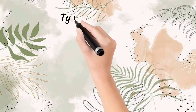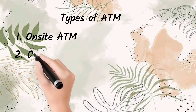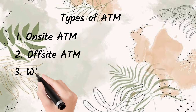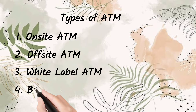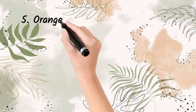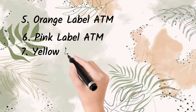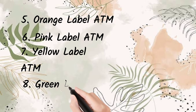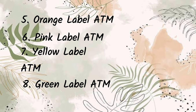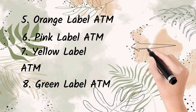Now, the types of ATM. First, we have on-site ATM, then off-site ATM, then white label ATM, brown label ATM, orange label ATM, pink label ATM, yellow label ATM, and finally green label ATM. These are the types of ATMs, and now we will study each type in detail.